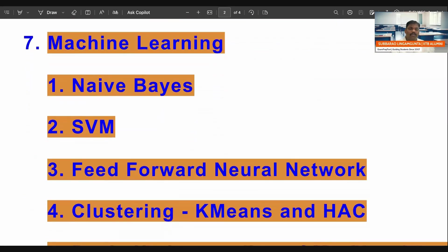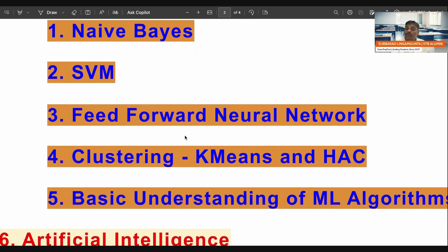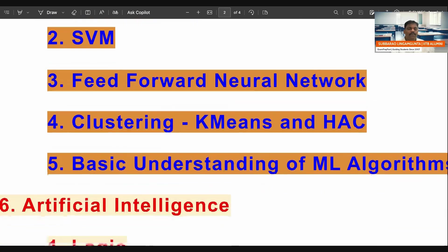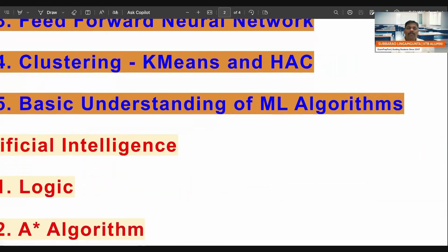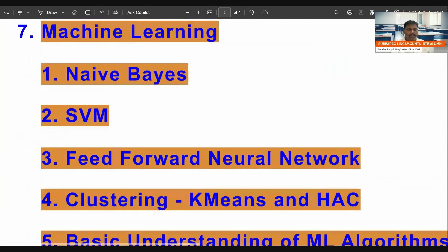Next one, in machine learning, important topics are Naive Bayes. Next one is SVM, feed forward neural network, clustering - k-means and HAC, basic understanding of dimensionality reduction algorithms. These are very important topics. Please have a look on this.